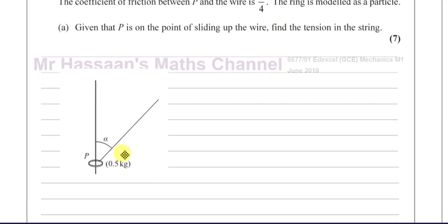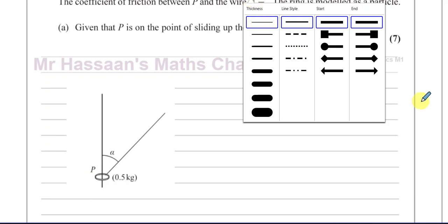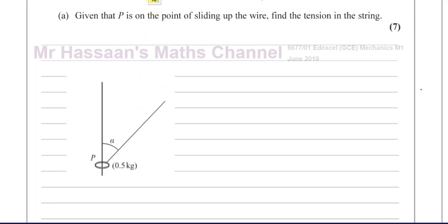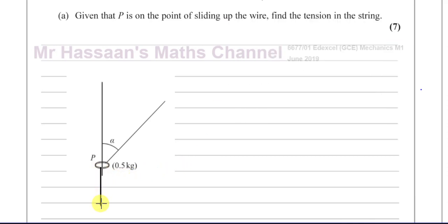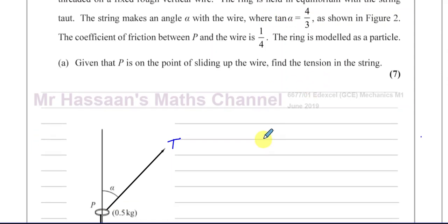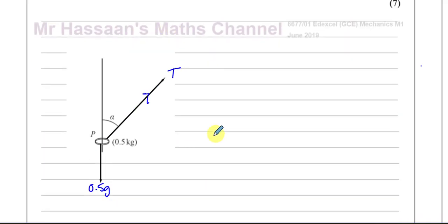There have been a few questions about this type of situation on the channel, so I'll go through this in detail. The forces acting on the ring are: its weight acting vertically downward, which is 0.5g; the tension in the string acting along the string; and because the ring is on the point of sliding up the wire, friction is acting downward, opposing the motion. Since it's on the point of sliding, friction has reached its maximum value.